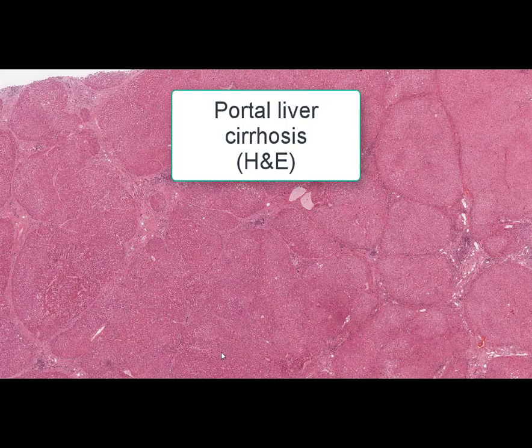On this slide we can see a liver. The stain is hematoxylin and eosin, and the name of the slide is portal liver cirrhosis.